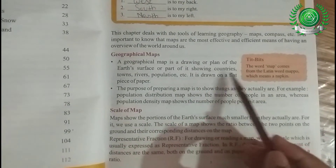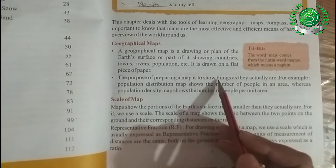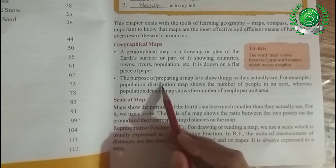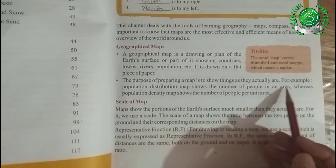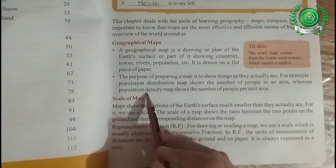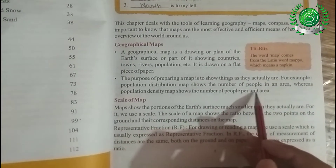It is drawn on a flat piece of paper. The purpose of preparing a map is to show things as they actually are. For example, a population distribution map shows the number of people in an area, whereas a population density map shows the number of people per unit area, so we can know the actual conditions.